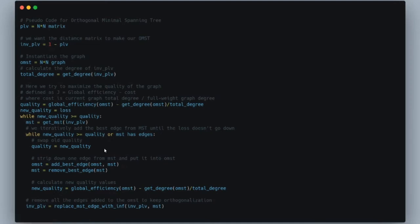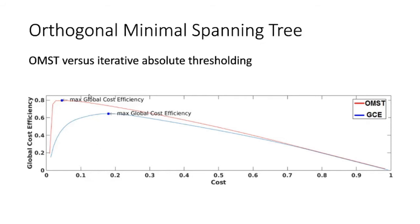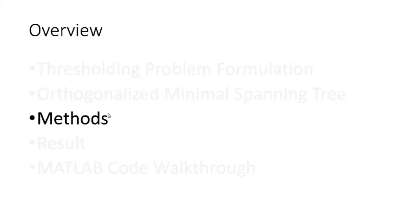This is the quality curve we're trying to maximize. This curve is from another method — the iterative thresholding technique — where the max global cost efficiency is here. The OMST method's peak is clearly higher, so the authors claim their method achieves higher quality than the iterative approach.